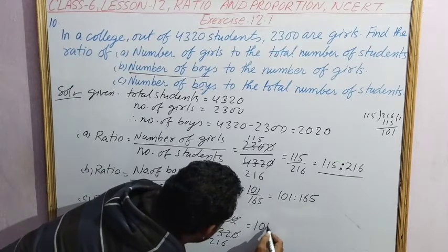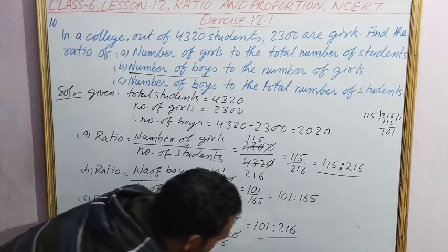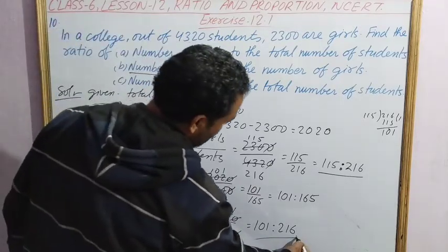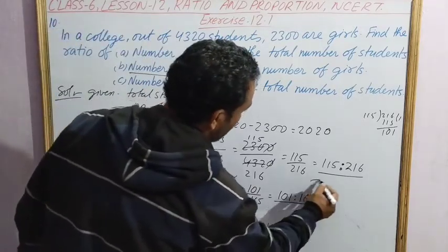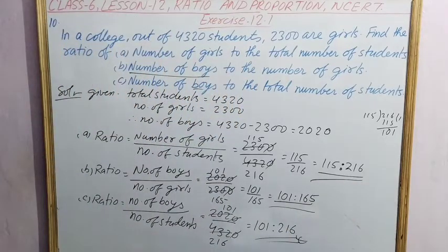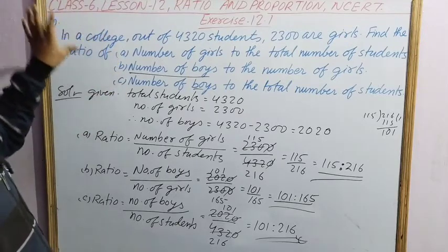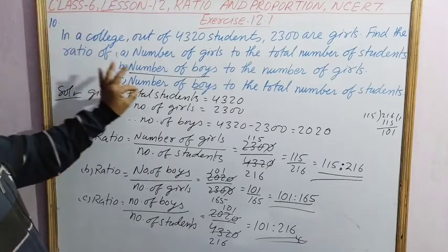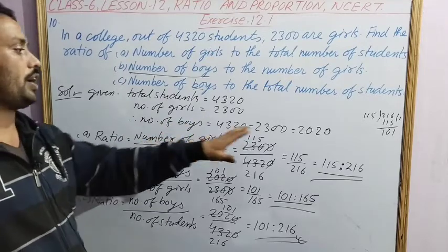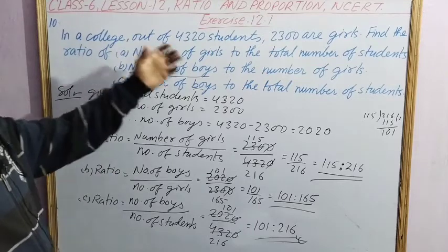So it will be 101 is to 216. All the ratios you will get like this. There is no doubt in this question — it is a simple question. Total students are given, number of girls is given, so first find the number of boys, then find the ratios as stated.